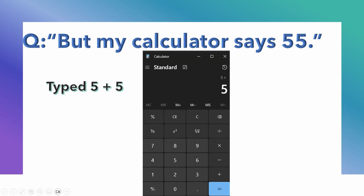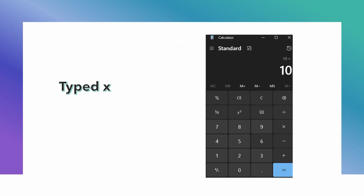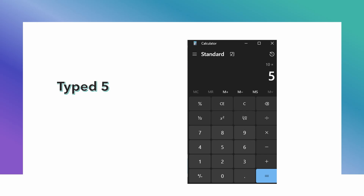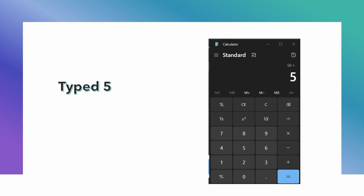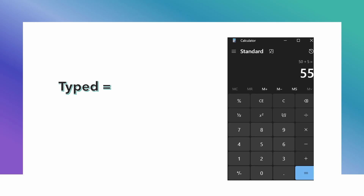Some people may say their calculator gives 55. Here I've got an example using the standard calculator on a Windows computer. I've typed in 5 plus 5, then the times symbol — and what the standard calculator does is it messes everything up. It just computes 10 right away. Then I type 5, and when I hit plus it jumps to 50. Then I type the last 5, hit equals, and it says 55. It's doing one operation at a time.